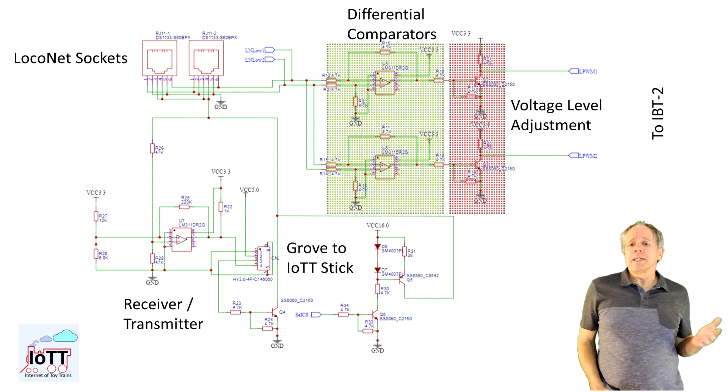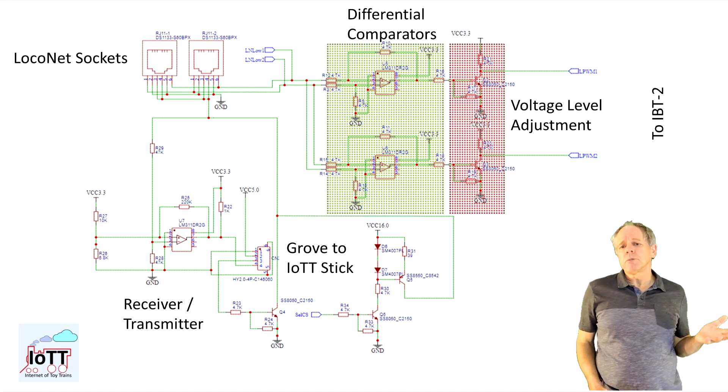Looking at the schematics, it becomes clear how this functionality is implemented. In booster mode, the incoming DCC signal is processed through a set of high impedance comparators followed by voltage level adjustment to make it a nice 3.3V DCC rectangle waveform. This signal is then sent to the selector I discussed earlier, where it is selected when the device is in booster mode.